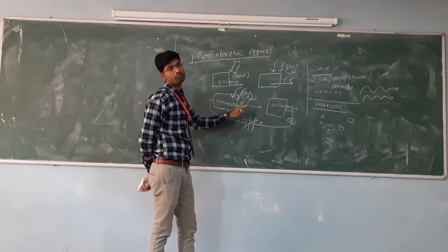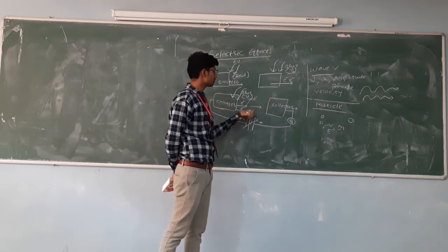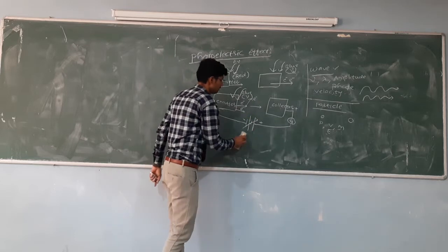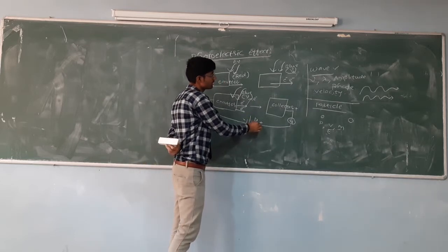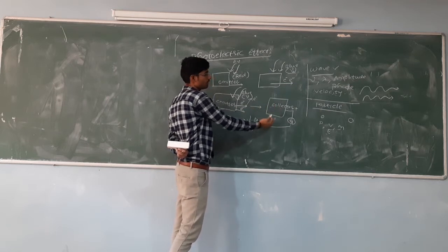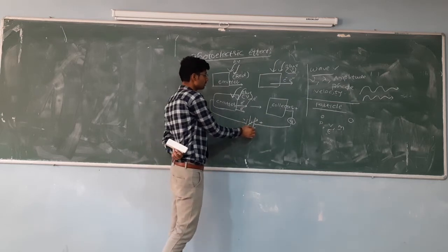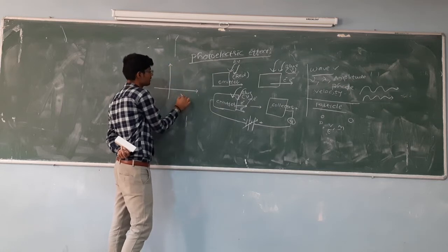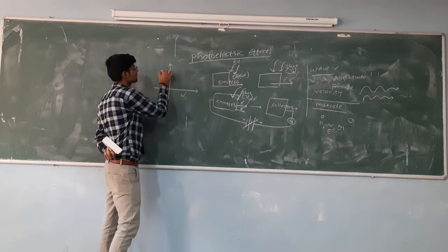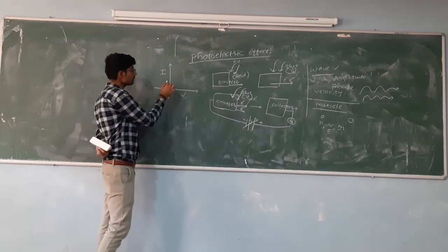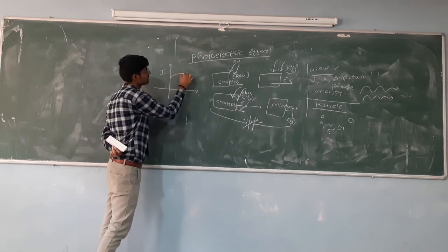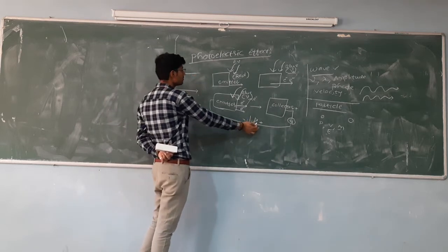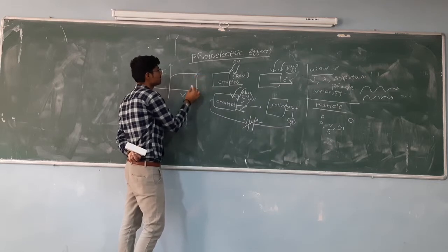Even without the battery, there is some current flow because the motion of electrons carries current. If we increase the positive potential, more electrons come towards the collector and more current flows. As we increase the positive potential, the current increases first and then at a particular maximum positive potential, the current reaches a saturation value — the maximum value of current.